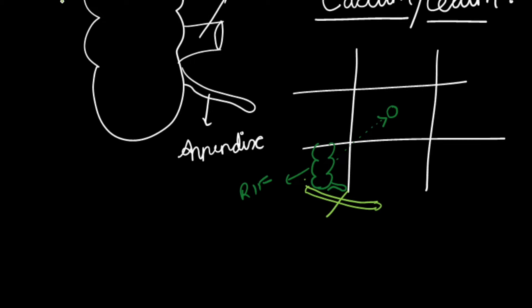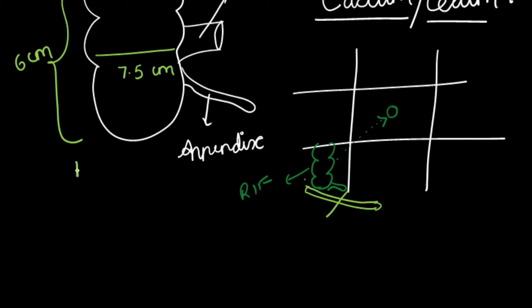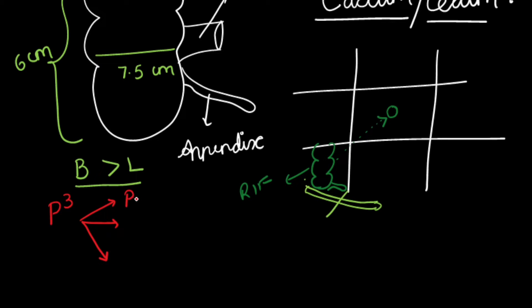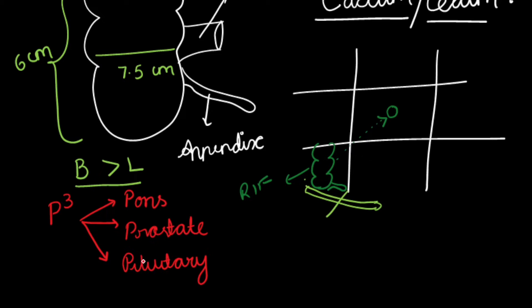Regarding the size of the cecum: length is 6 centimeters and breadth or width is 7.5 centimeters. The breadth is more than the length. This specification is seen in a few other organs, remembered by the mnemonic P3 — pons, prostate, and pituitary — where breadth is always more than length. This is important for MCQ purposes.